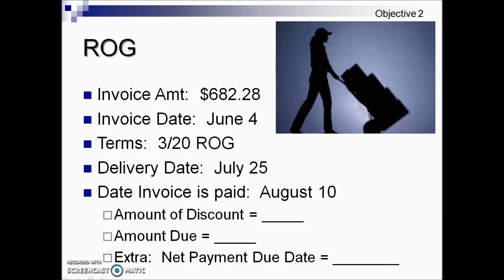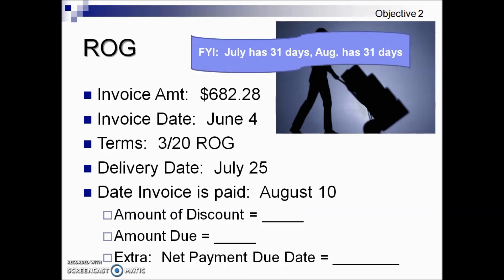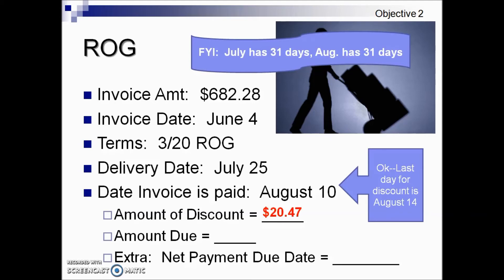Here we're given an invoice amount and invoice date. The terms are 3% if paid within 20 days of receipt of goods, and we have a delivery date of July 25th — that's the date we will use to determine eligibility. The invoice was paid on August 10th. July has 31 days, so there are 6 days to get us to the end of July, and then 10 days more means 16 days from receipt of goods that this invoice was paid. It falls within the window of 20 days given in the terms, so a 3% discount is applicable. Taking 3% times $682.28 gives us $20.47. The amount due is the invoice amount less the discount.